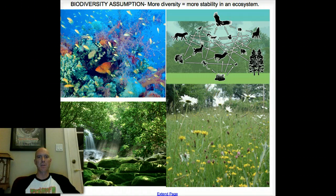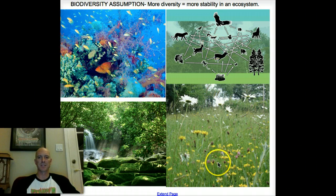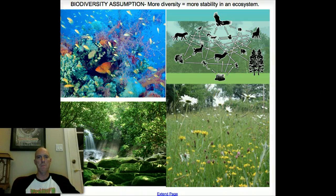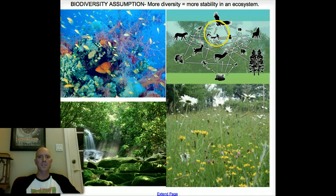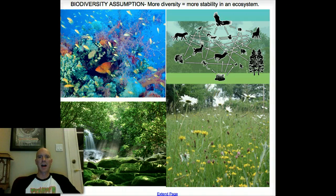Our assumption is that the more species, the more diverse an ecosystem is, the healthier and more stable it's going to be. If it's more diverse, we assume it has a more complicated food web. That means if something happens — like a volcano or a hurricane — and some members are damaged or migrate out, the system still has other feeding and energy pathways. That's why more diverse systems are usually more resilient and stable.